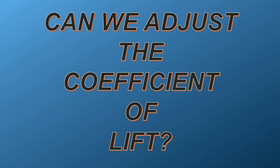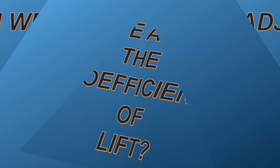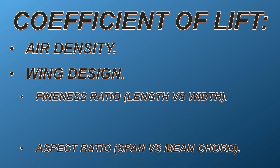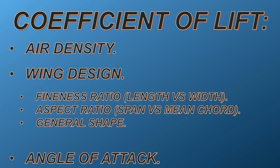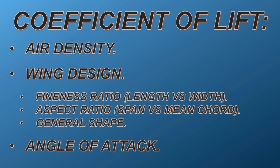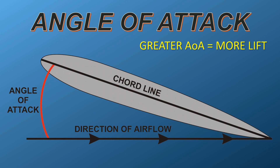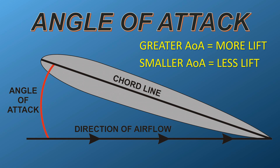So the final part of the equation is the coefficient of lift, Cl — but can we change that? The coefficient of lift is made up of a number of elements: air density, wing design, and the angle of attack. Air density is not under the pilot's control, and we have discovered that changing the blade design during flight is not possible. This leaves us the angle of attack. We can indeed change the angle of attack, and this is what a helicopter design utilizes. The greater the angle of attack, the more lift is produced for a given speed, and the smaller the angle of attack, the less lift is produced.